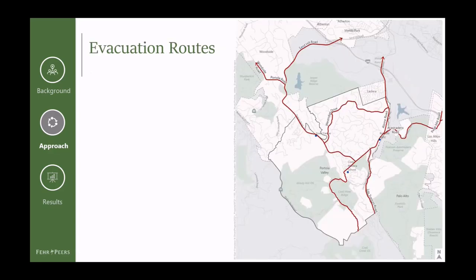Here you can see the key evacuation routes for Portola Valley. Three of those routes go to the north across Interstate 280, either onto the interstate or into the more urban area north of it. We also have one evacuation route to the northwest on Woodside Road. The town provided information about trip assignment — there are no local shelters in the area, so we assumed people would be traveling outside of Portola Valley to stay with friends, family, or hotels. We assumed a fairly even split of destination trips across the northern evacuation routes, with very few trips to the Woodside Portola Road route.